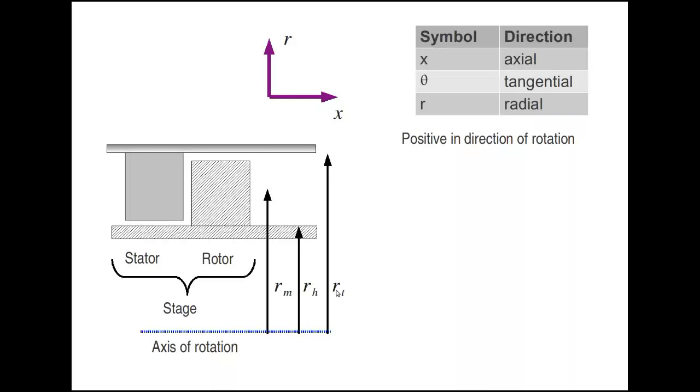You can see I've drawn the three different radii that we use in this course. We have rh for the hub radius, rm which is the mean radius, and rt which is the tip radius. The mean radius is actually just the average of rh and rt, so rm equals rh plus rt divided by 2. There's no rotation in this particular view. The rotation is in and out of the page, so being positive in the direction of rotation doesn't mean a lot here.